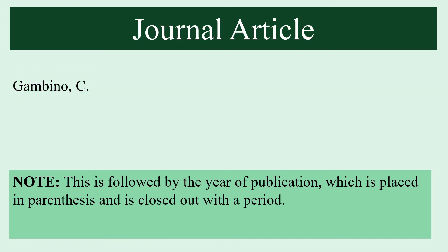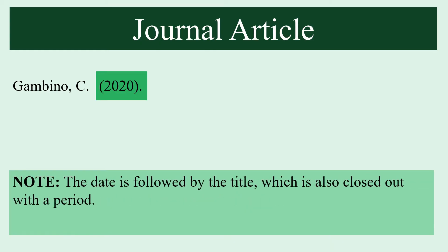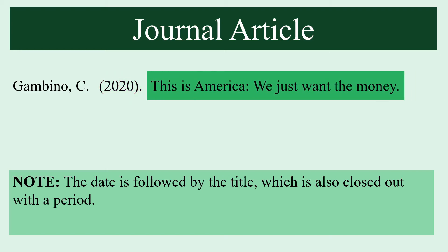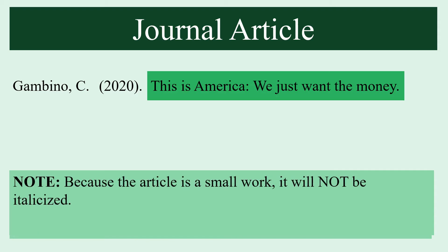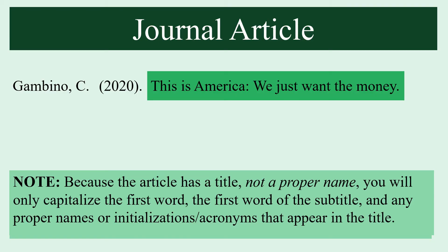The author's name is followed by the year of publication, which is placed in parentheses and is also closed out with a period. Once we have the date, we follow that with the article title, which will likewise be closed out with a period. Because the article title is a short work, it will not be italicized. Moreover, we will not use proper name capitalization; instead we simply capitalize the first word, the first word of the subtitle, and any proper names, initializations, or acronyms that appear in the article title.